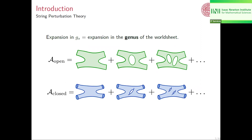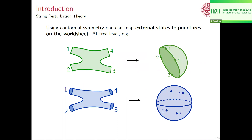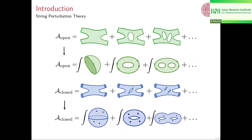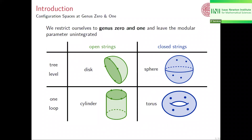If we do this expansion in the string coupling, it's the same as an expansion in the genus of the worldsheets. For the open string with four particles, it looks like this; for the closed string, it would look like this. Using conformal symmetries, we can map external states to punctures on the worldsheet. At tree level, the open string diagram turns into a disk with punctures on the boundary, and for the closed string, we get a sphere with punctures. In this talk, we restrict to genus 0 and genus 1, leaving the modular parameter unintegrated. The four configuration spaces we care about are the disk, the sphere, the cylinder, and the torus.